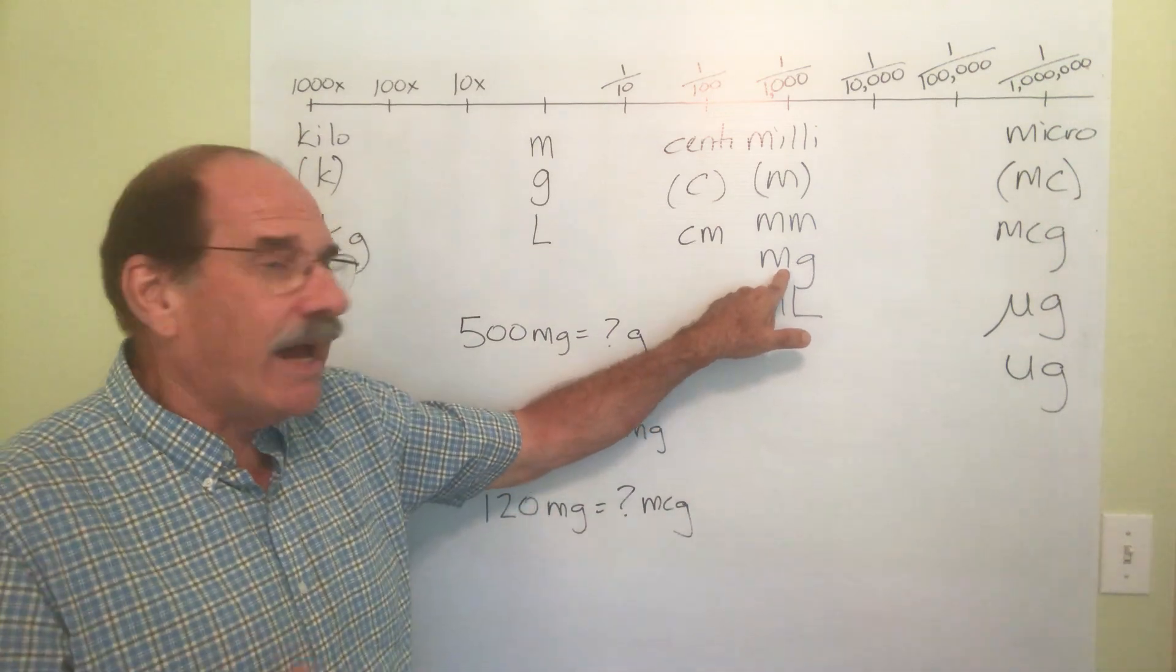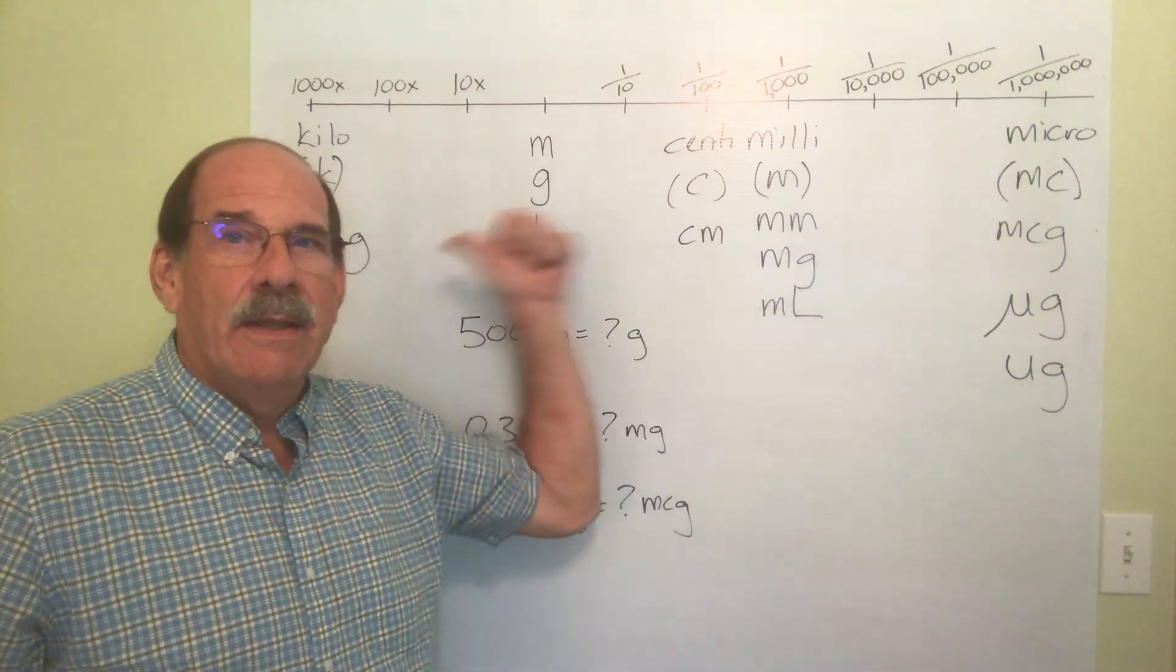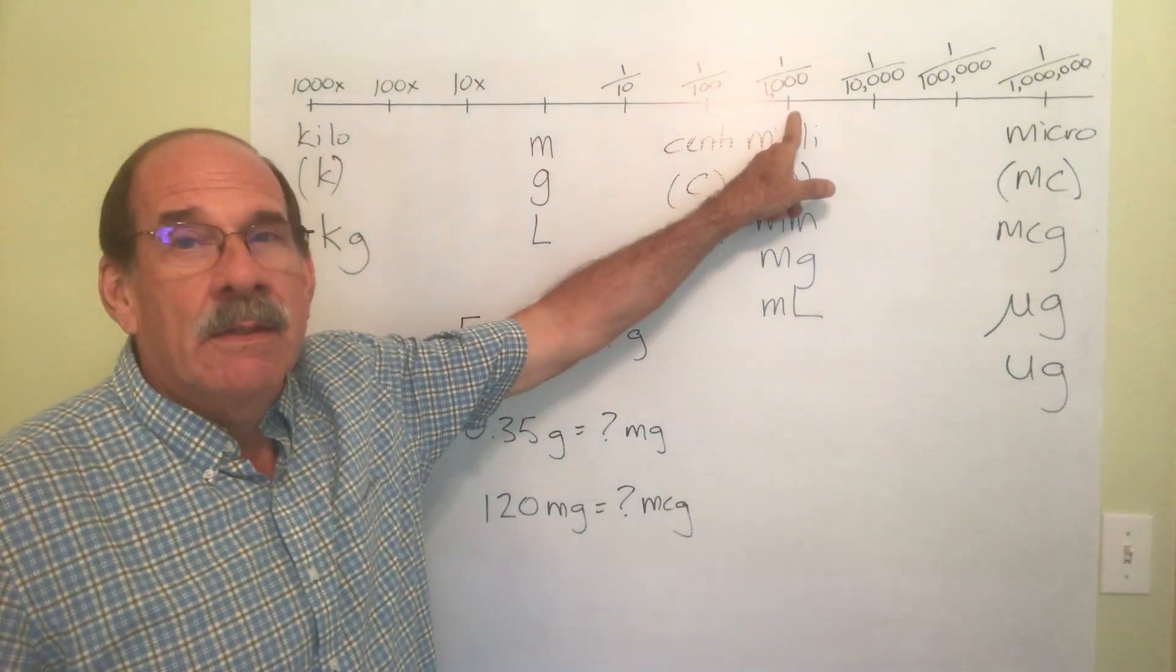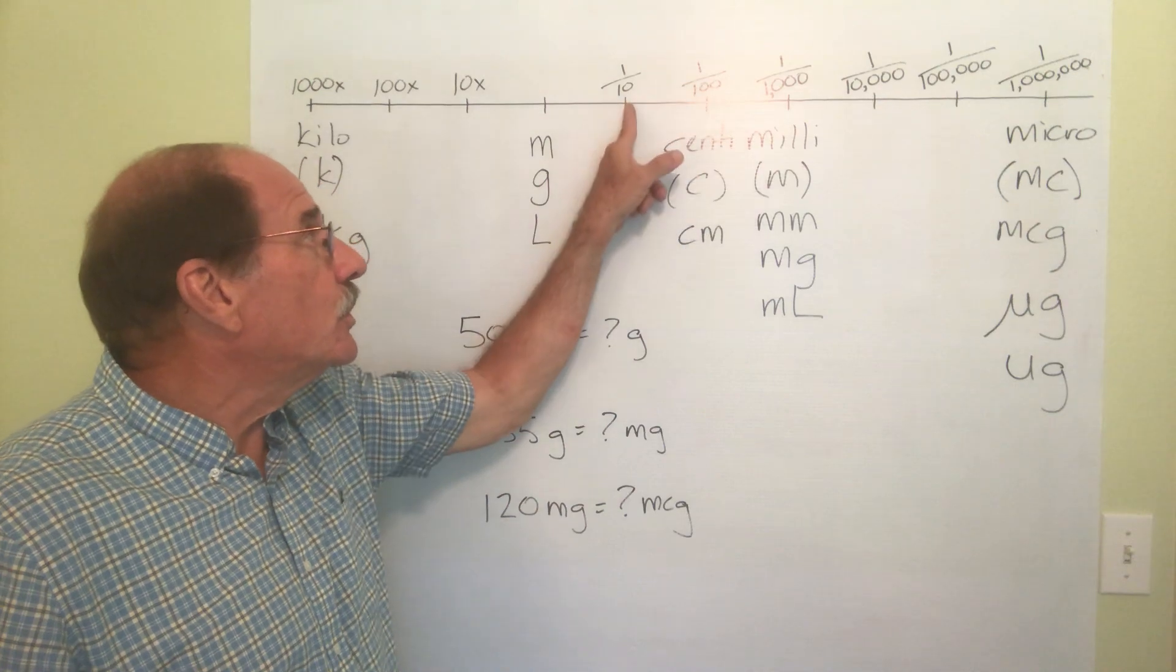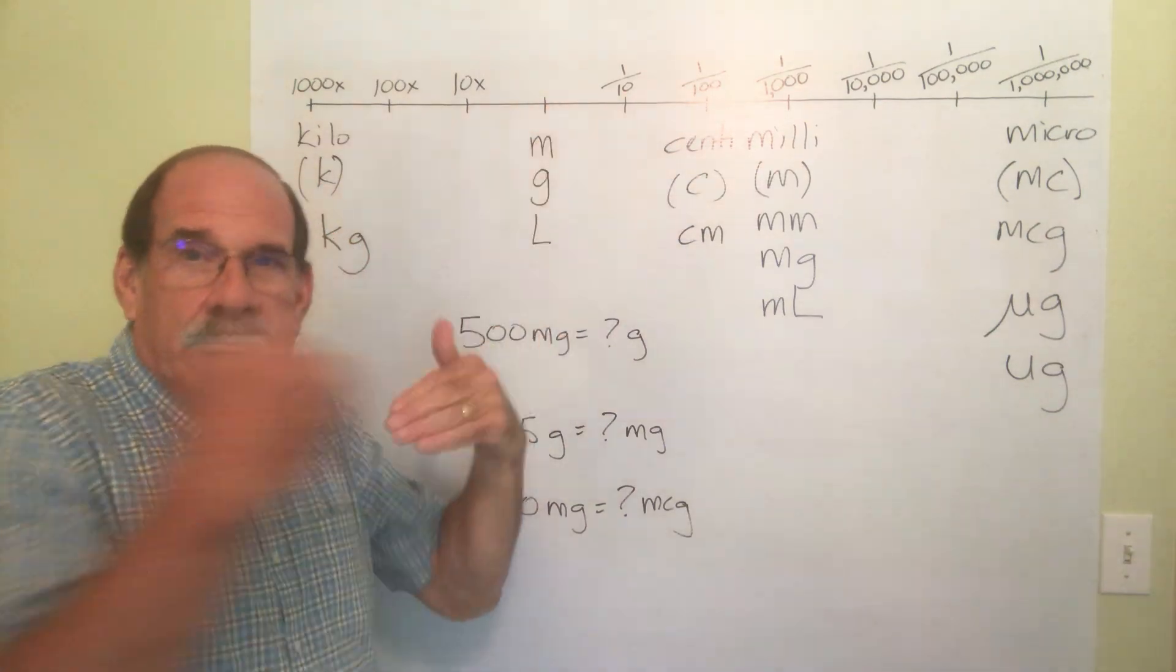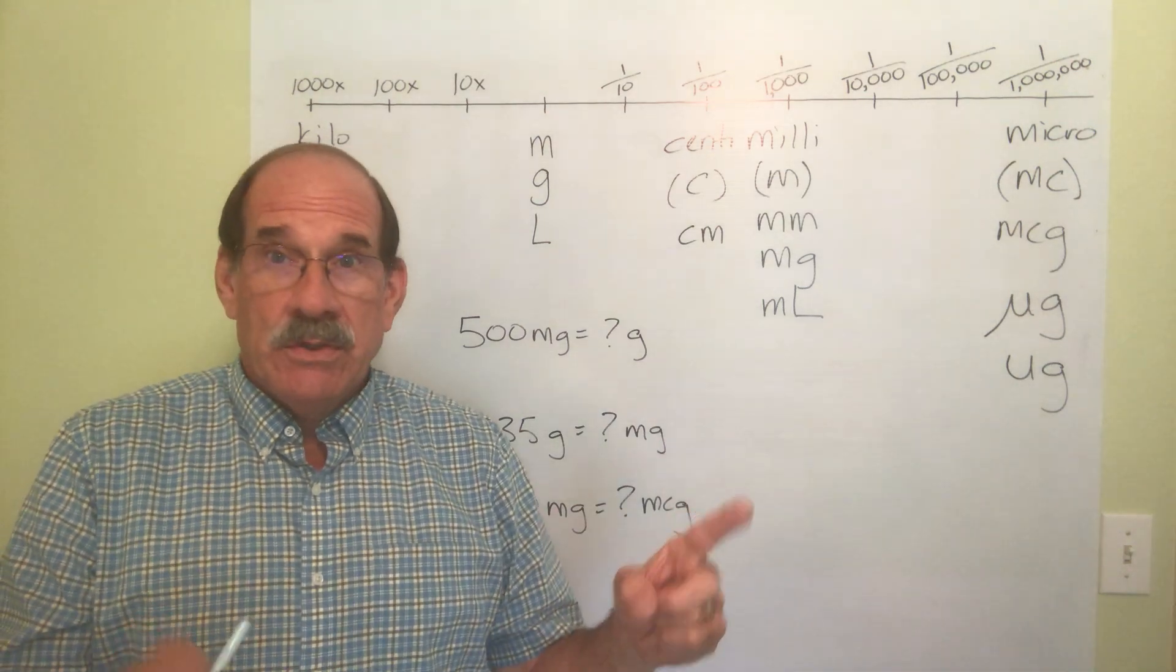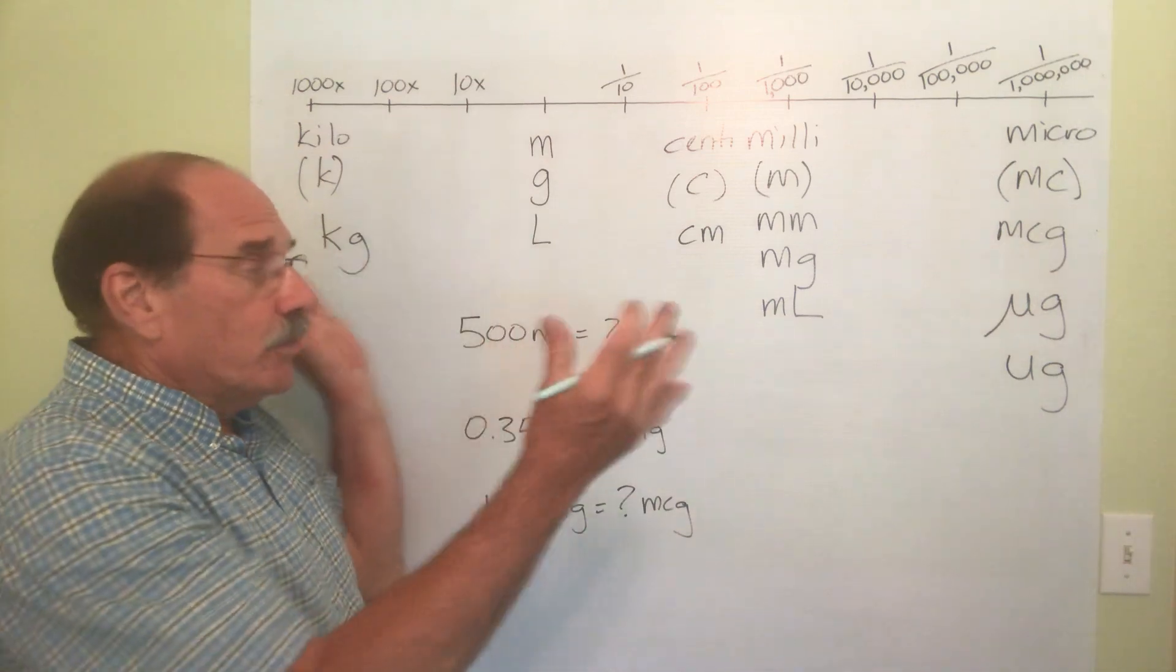So if I'm at milligrams and I'm trying to find grams, which way do I go? This way, left. And how far do I go? I'm starting here, I'm going one, two, three. I'm going three little jumps, three little segments to the left.